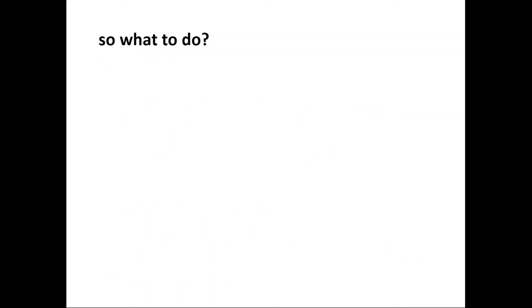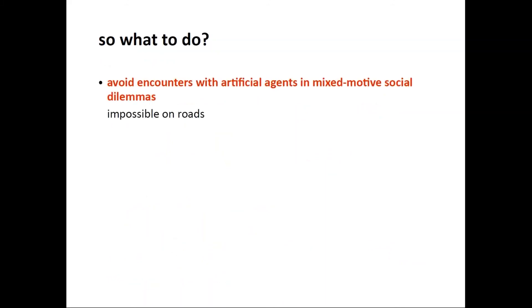What can we draw from these results in the bigger picture about introducing AI into society — for example, self-driving cars into traffic? One thing to think about is avoiding putting artificial agents into mixed motive social dilemmas. But as the game of Chicken illustrates, that might be impossible on the road, since many traffic interactions involve mixed motive social dilemma scenarios where we have the opportunity to cooperate or to take advantage of others' cooperative behavior.